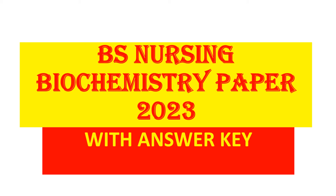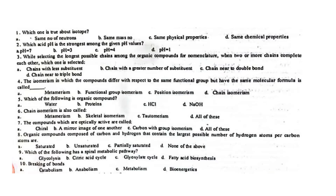Bismillahirrahmanirrahim, Assalamualaikum dear students. This is the biochemistry paper 2023, BS nursing, with answer and explanation. Question number one is: which one is true about isotopes?